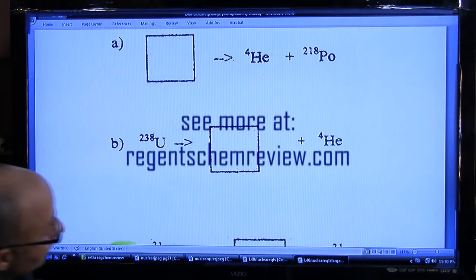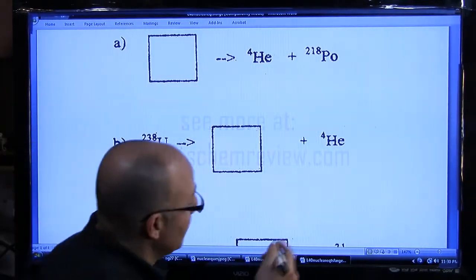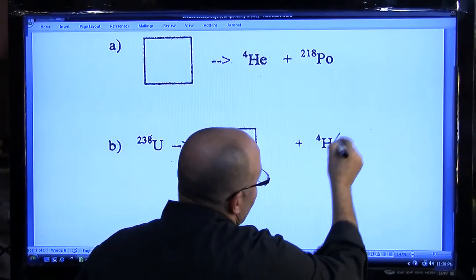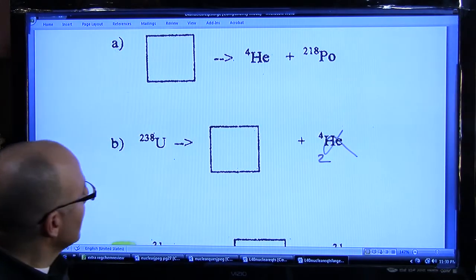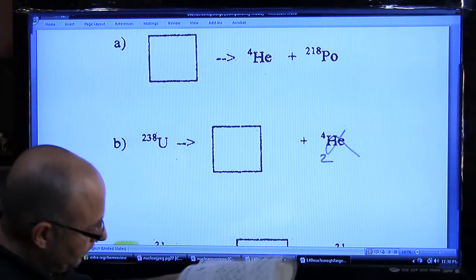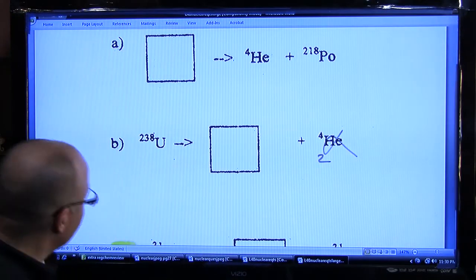Next one, again, notice it's an alpha particle that's being emitted. You could put it written in here instead, alpha. You put in the 2, the atomic number. Uranium here, its atomic number, look it up in the periodic table, it's 92.